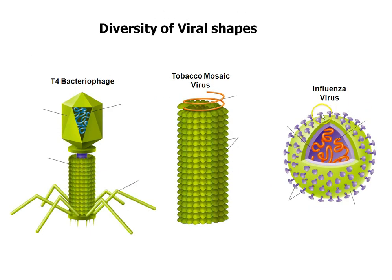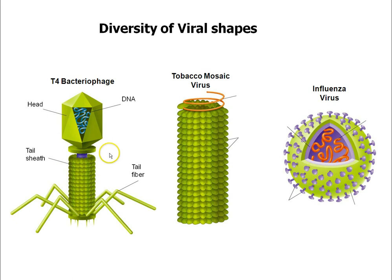We have some diversity of viral shapes. This is called a T4 bacteriophage — a virus that likes to infect bacteria. All viruses are very simple. They have a protein coat called a capsid, and then inside is either DNA or RNA. That's pretty much it for a virus, though sometimes they have a few enzymes in there. Here we have the tobacco mosaic virus — it's just got a capsid made of proteins and RNA on the inside, and this one infects tobacco plants.